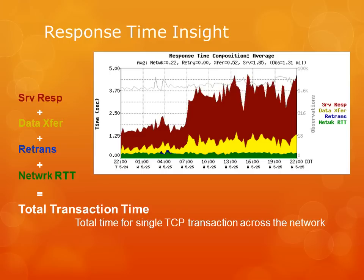Problem number two: you get an email from the help desk saying that users were having problems using a particular application starting at 7 a.m. and lasting all day. By looking at this graph, it's easy to see that the network is not the problem. Both the network round trip time and the retransmission delay did not deviate at 7 a.m., nor for the rest of the day. This means that the network was transmitting packets all the way out to the user and back at the same speed it was before, during, and after the problem.